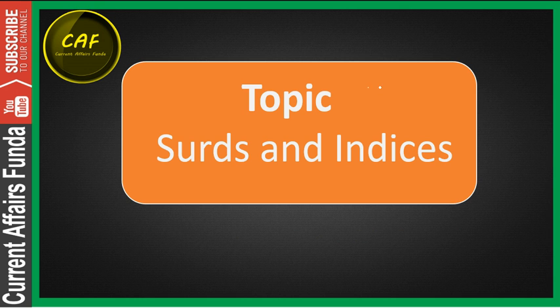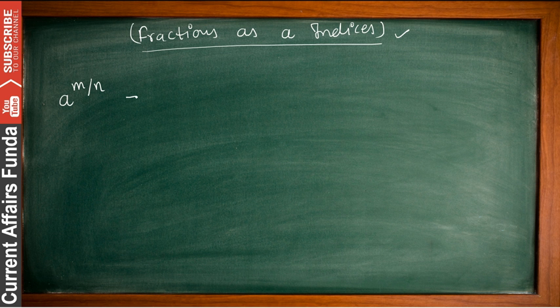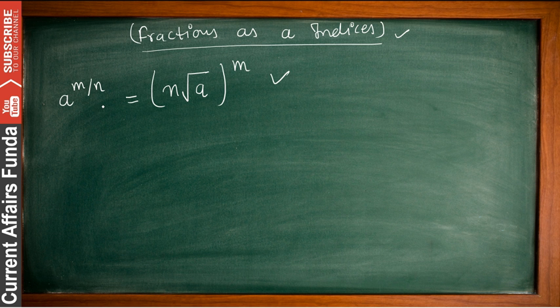The topic is Surds and Indices Part 2. There is a concept remaining from Part 1, that is fractions as indices. Basically, if you have a form like a to the power m divided by n, this is generalized as the nth root of a, raised to the power m. This is your formula.